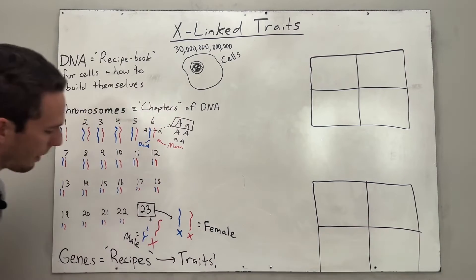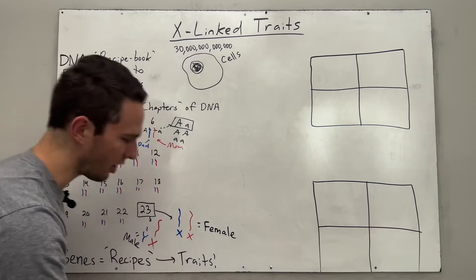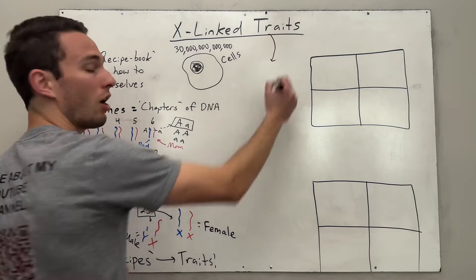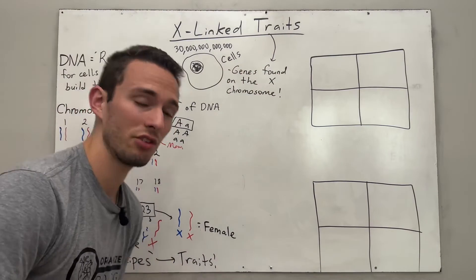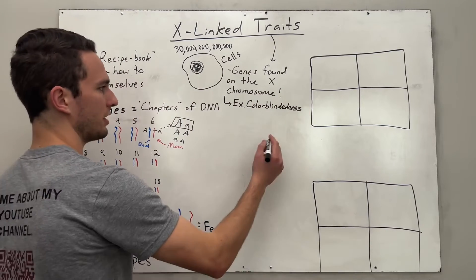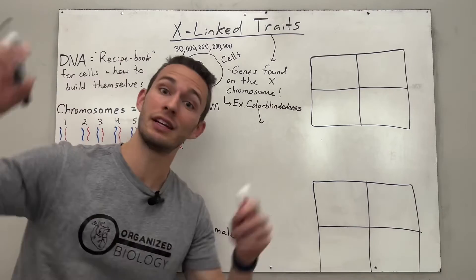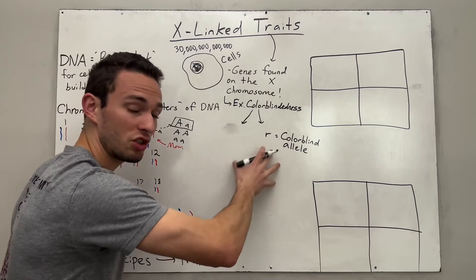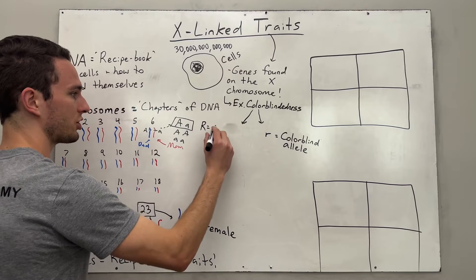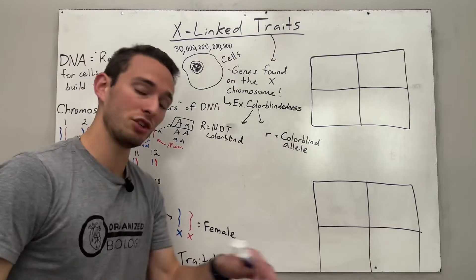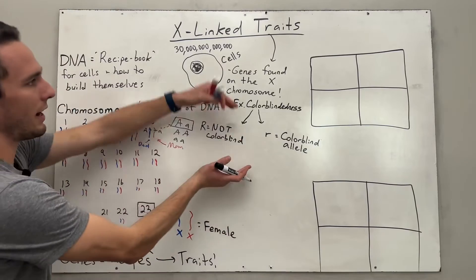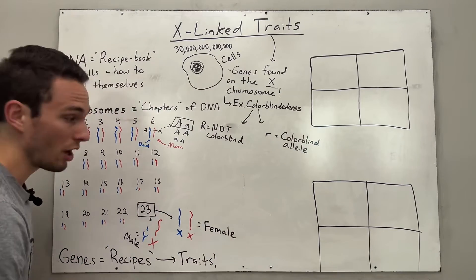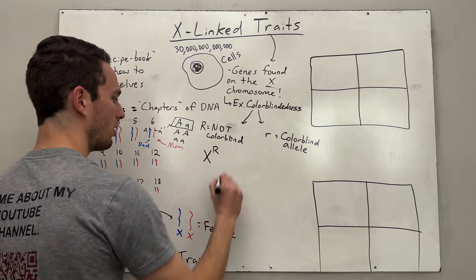Here's where X-linked traits come in. If you are male, how many X chromosomes do you have? Just one. If you are female, you have two. X-linked traits are specific genes found on the X chromosome. One such gene deals with colorblindness — a recessive allele for the colorblind gene. If you have a little r, that means you have the colorblindness allele. Big R means not colorblind. This gene is found on the X chromosome itself, so we designate the alleles as X superscript R or X superscript r — indicating which version of the colorblindness gene is on that X chromosome.